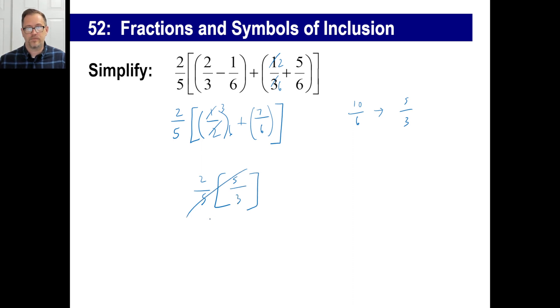Okay, so two-fifths times five-thirds. That's a piece of cake. You done. Two over three. There you go. Let's do it. Okay.